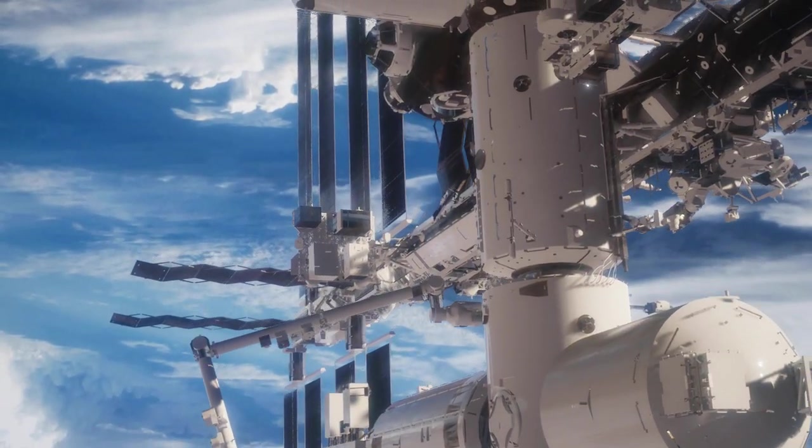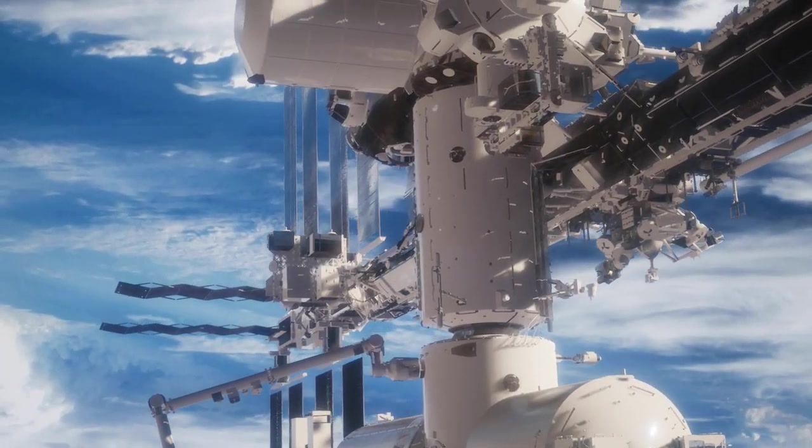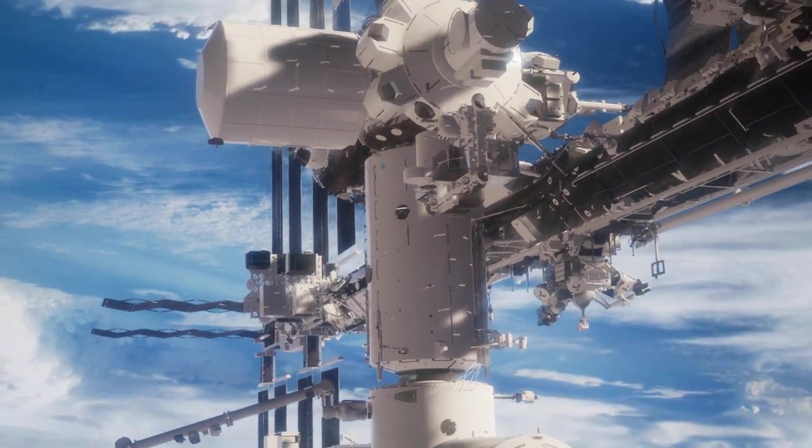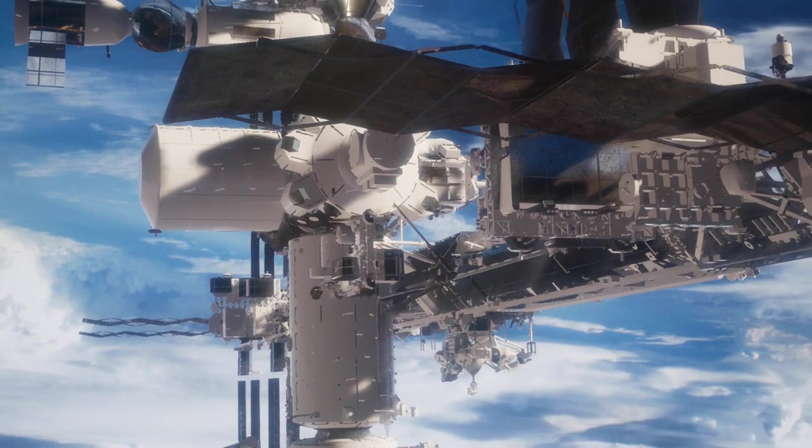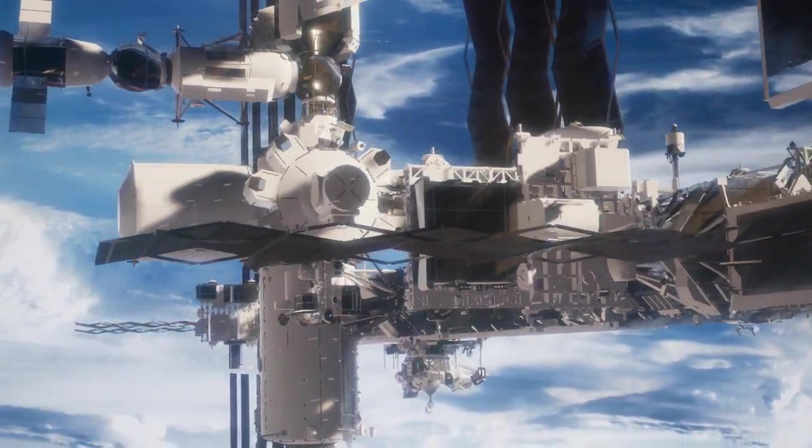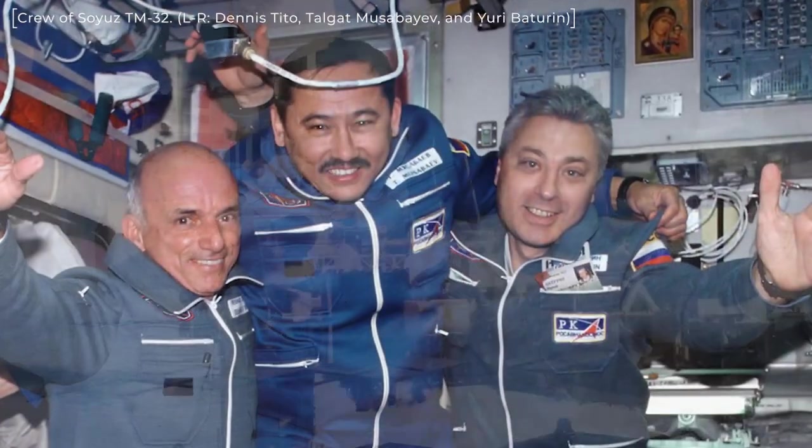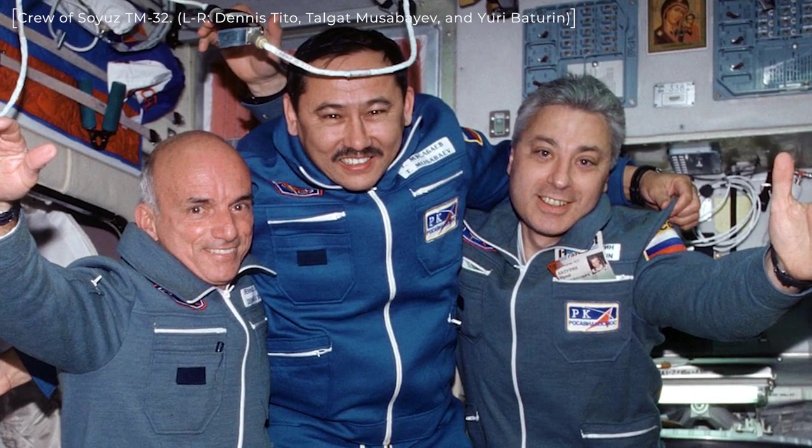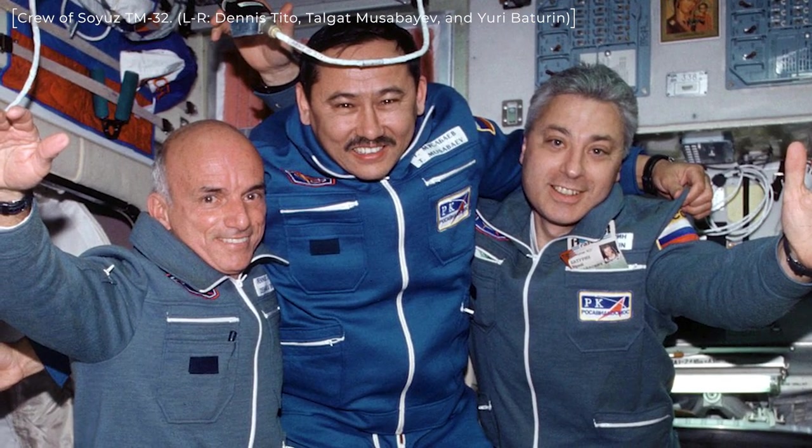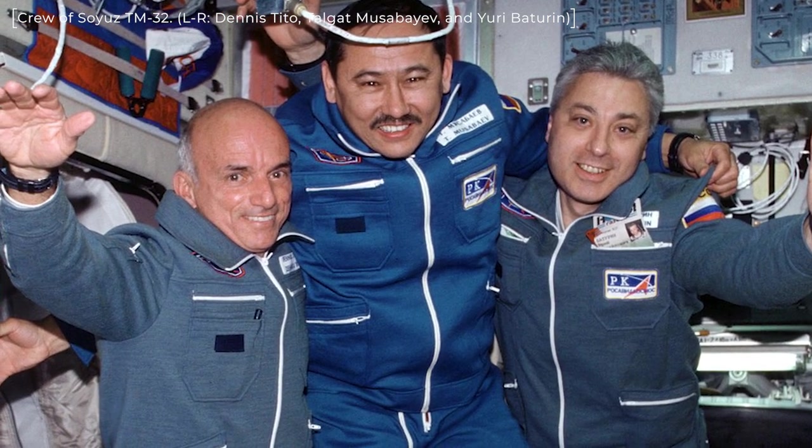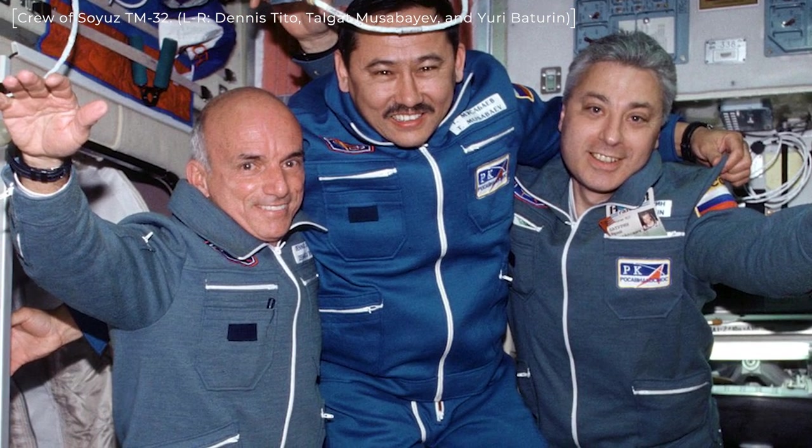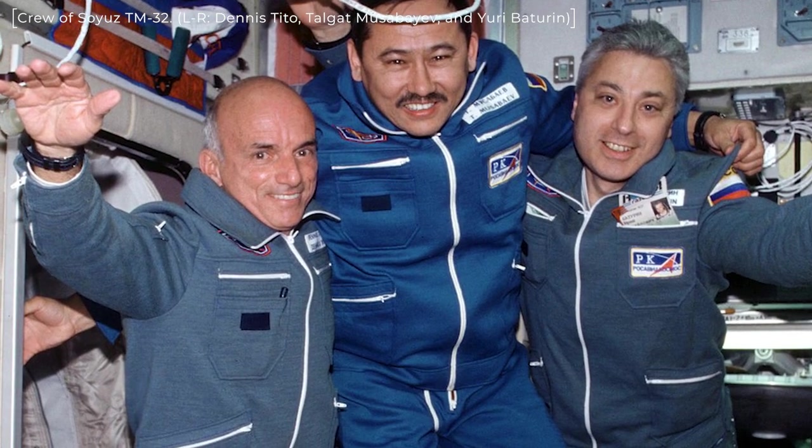Between 2001 and 2009, seven private citizens ventured into space. They each traveled on board a Russian Soyuz spacecraft and spent about a week or so at the International Space Station, presumably enjoying the scenery. The very first was back in 2001, Dennis Tito, an American businessman. Originally it was planned that he would go to the Mir space station, but when Roscosmos decided to decommission the station, he managed to get his trip transferred onto the International Space Station.